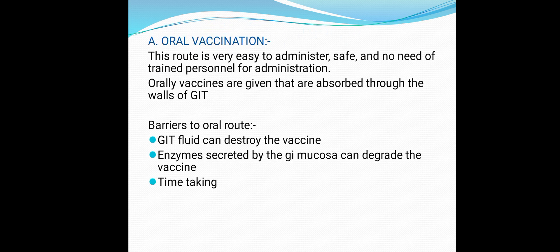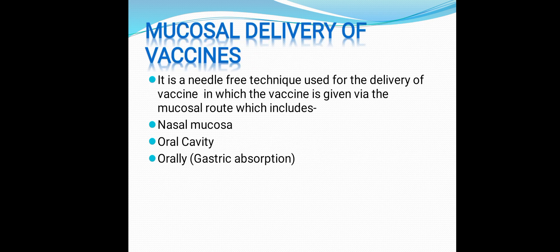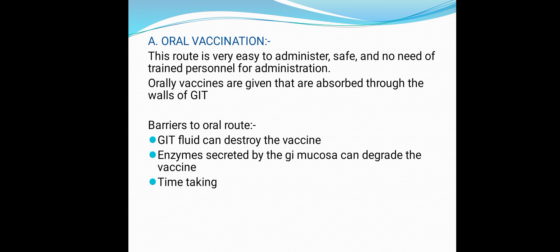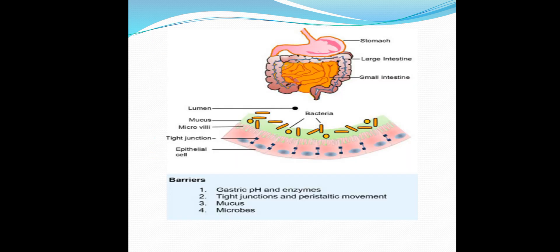First is oral vaccination. This route is very easy to administer and safe; there is no need for trained personnel, meaning a patient can take it by themselves. Oral vaccines are absorbed through the walls of the GIT — through the stomach and intestine. The barriers to the oral route include GIT fluids that can destroy the vaccine, enzymes secreted by the GIT mucosa that can degrade the vaccine, and it is time-consuming as it follows the ADME process.